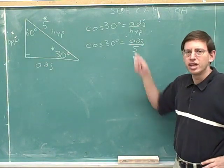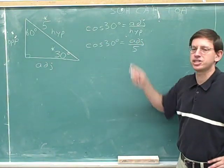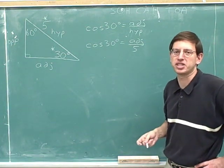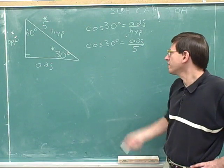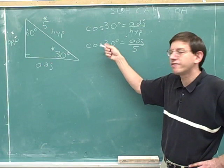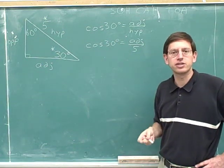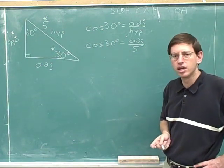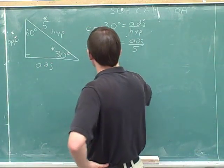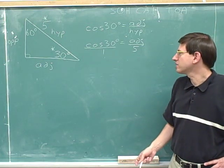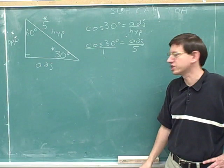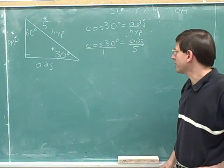Here we have a fraction, and we can use cross-multiplication to simplify this. At first you might object that we don't have two fractions set equal to each other — but we kind of do. If we want to make the left-hand side into a fraction, we can easily do that. You can make anything into a fraction by putting it over one. So now both sides of this equation are fractions, and we can cross-multiply.